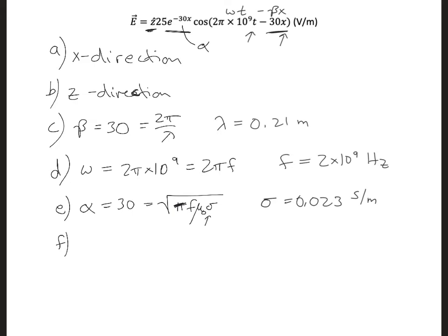Then we have F. What is the skin depth? Skin depth is defined as being 1 over alpha. And we just solved for alpha, so it's 1 over 30, 0.033 meters.